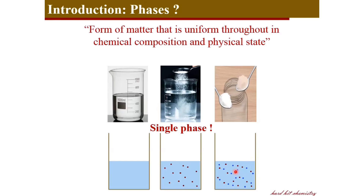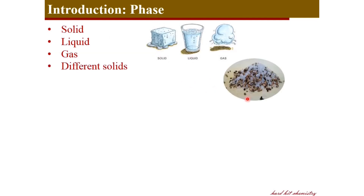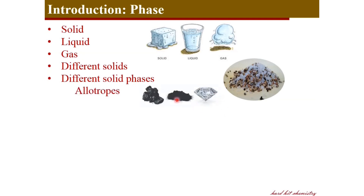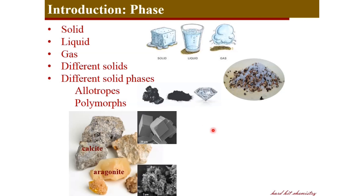The three different physical states — solids, liquids, and gases — constitute different phases. Different kinds of solids, like a mixture of salt and pepper, constitute different phases. And different forms of solids like allotropes — charcoal, graphite, and diamond, which are allotropes of carbon — constitute three different solid phases. Another example would be polymorphs: calcite and aragonite are polymorphic forms of calcium carbonate and constitute different phases because they have different crystallographic structures.